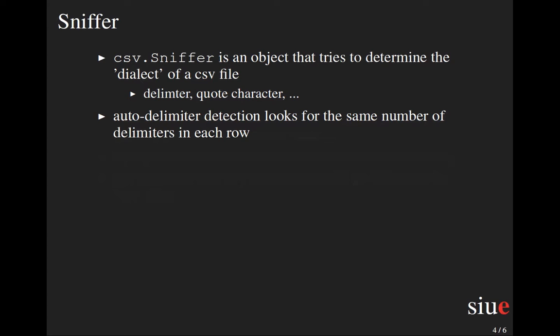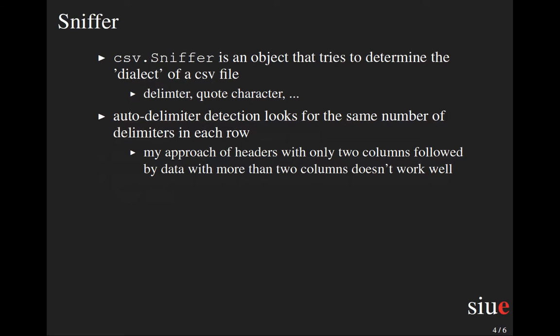The thing that mostly made it fail was that at the top of my CSV file I have entries with only two columns, so one tab per row, and then in the data section there are three or four columns with two or three tabs. That was confusing. So what I ended up doing was hardcoding — grabbing just five rows as a sample, assuming the header is always more than five rows, and using those five rows to determine the delimiter and whether there's a quote character.